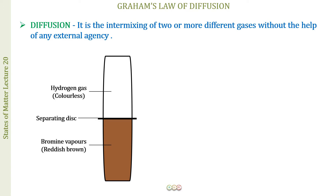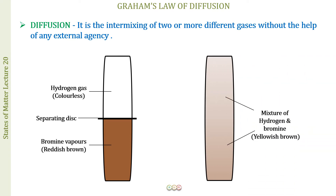Now, what do we do? We remove the separating disc. When we remove it, the process of diffusion begins — the gases mix with each other. Hydrogen gas, which is lighter, will come down; bromine vapour, which is heavier in comparison, will come up. They will form a uniform mixture, and the colour will be yellowish-brown — no colourless area, no reddish-brown area, throughout both cylinders.